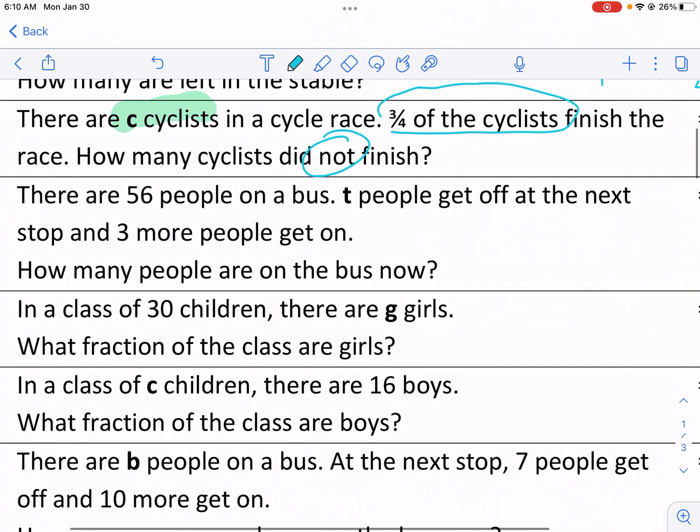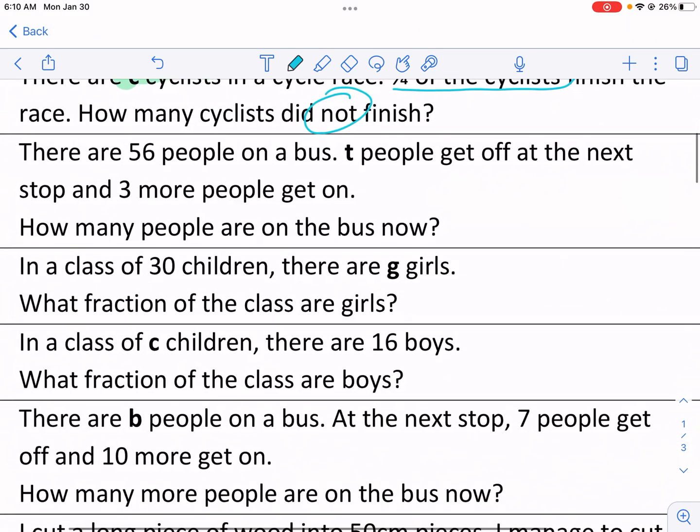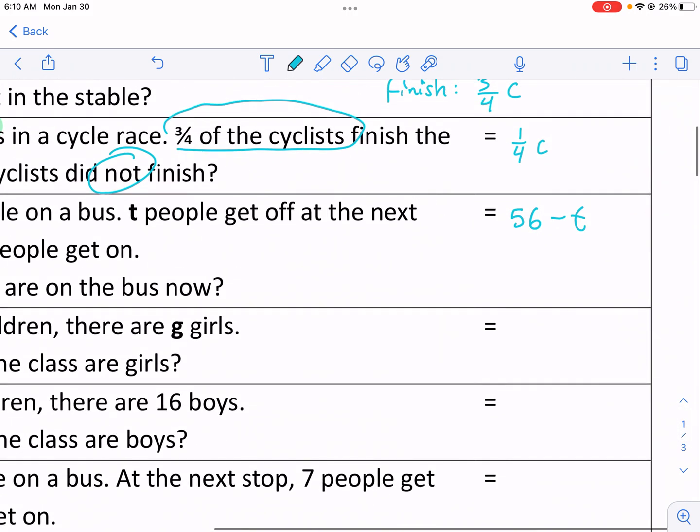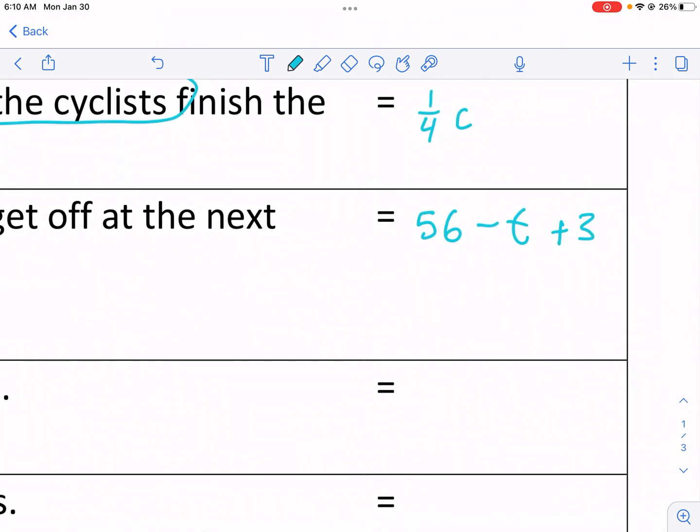And then three more people get on at the next stop. So the T people get off and three more get on. How many people are on the bus now? So we need to add that three there. And I'm done. Now, what you can do in this situation is you can combine like terms. You're going to be seeing this in future lessons of algebra. We can combine like terms. So we have 56 and we have three.